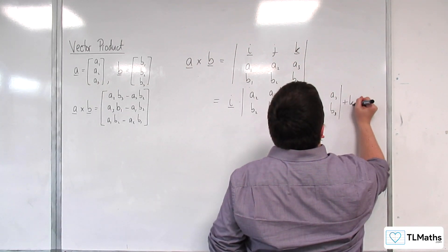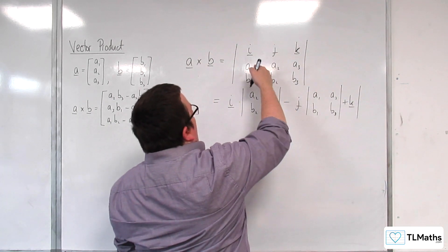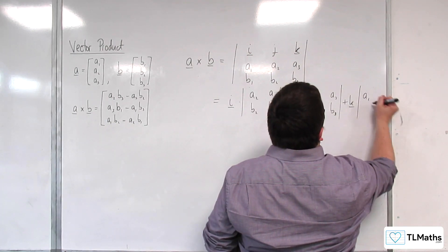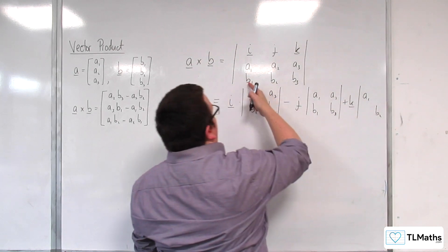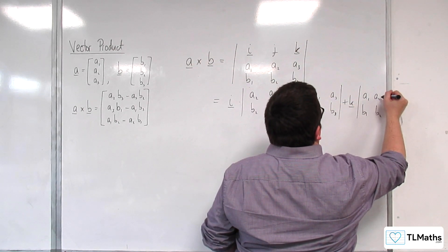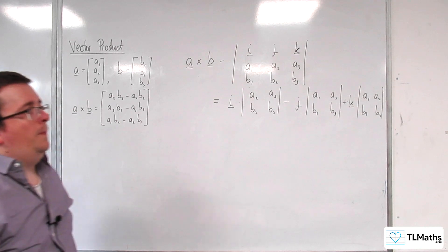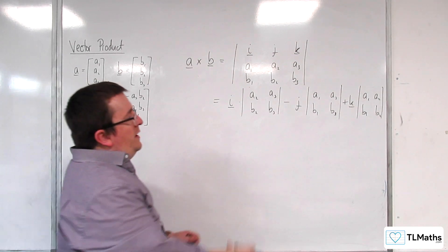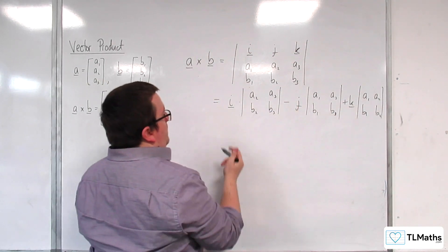Plus K times A1, B2, take away B1, A2. So, this is finding the determinant of this 3x3 matrix.